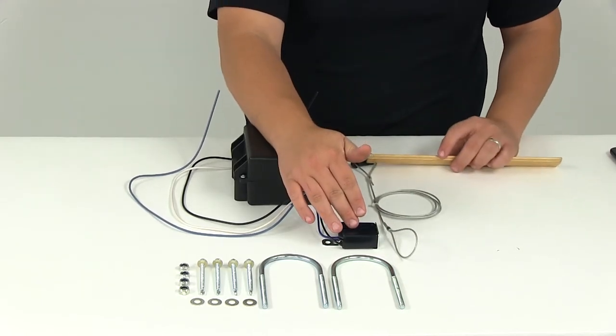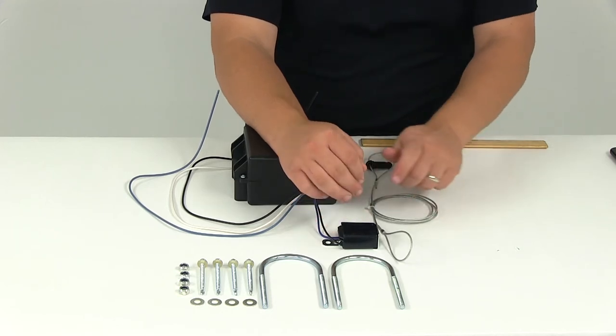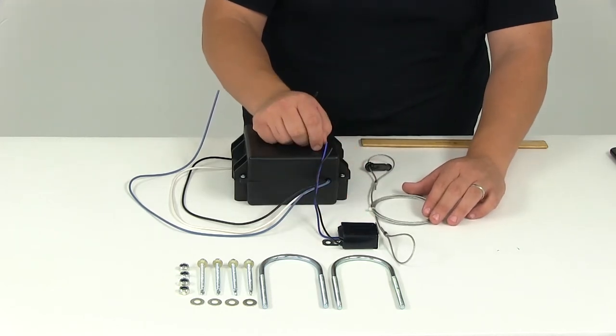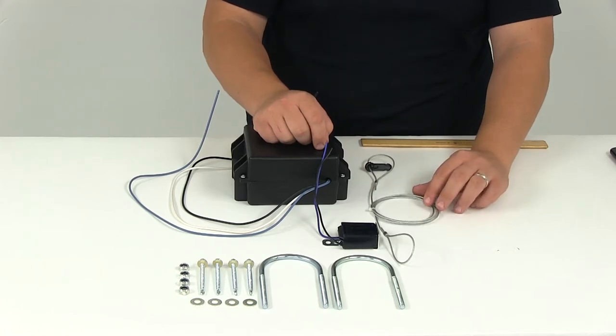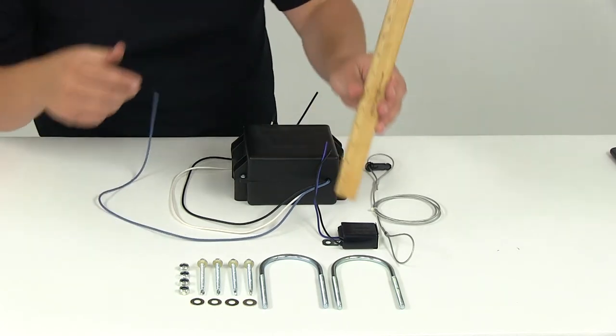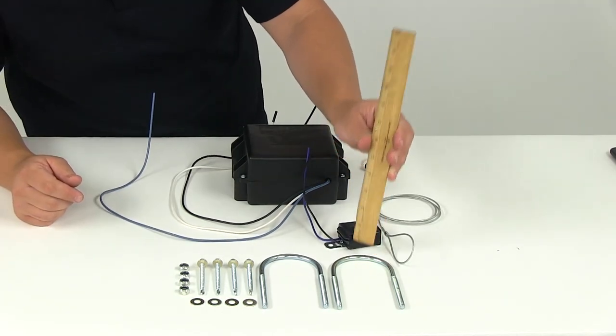When mounting this you want to make sure that you don't have any obstructions in line of the pull or the breakaway cable. You want that to be a clean pull or disconnect if that was to ever come disengaged. The overall height of that switch box is about seven-eighths of an inch.